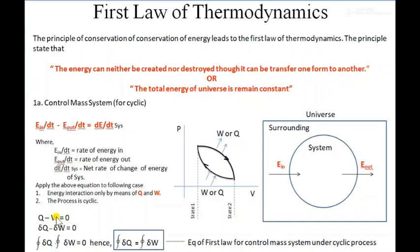We use δ (delta) instead of d to represent a small quantity of heat and work, because heat and work are both path functions. So instead of dQ and dW, we write δQ and δW. After that, the cyclic integral of δQ minus the cyclic integral of δW equals zero. The cyclic integral means the total heat interaction summed throughout the entire process during the cycle.